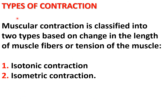Muscular contraction is classified into two types based on the change in the length of the muscle fiber or the tension developed in the muscle: isotonic contraction and isometric contraction.